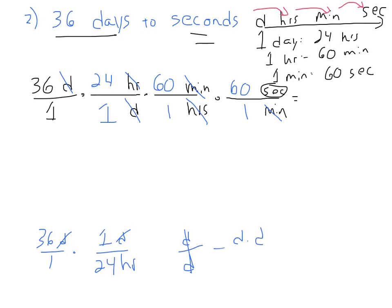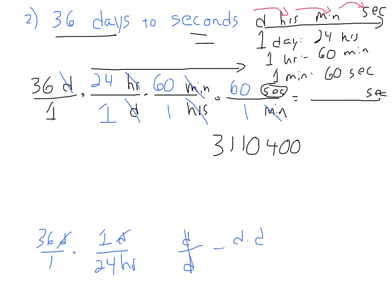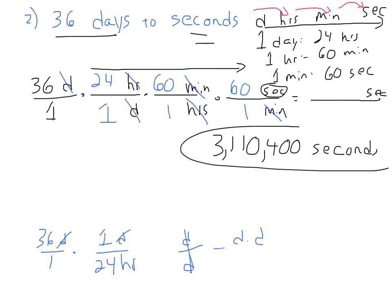Now multiply all the numbers in the numerator: 36 times 24 times 60 times 60. The denominator is all 1s, so that's easy. Your answer is 3,110,400. Put commas in after every three digits from the right. So 36 days is equivalent to 3,110,400 seconds. Make sure you include the units.